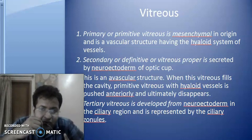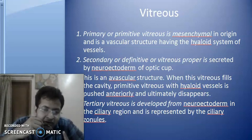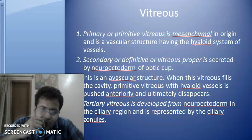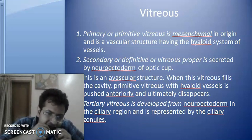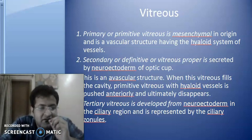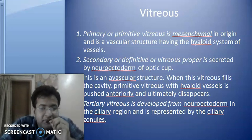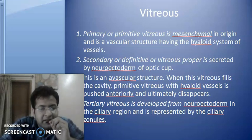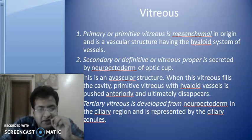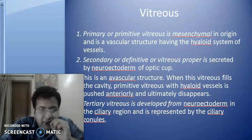The Primitive Vitreous is mesenchymal in origin, while the Secondary or Definitive Vitreous and the Tertiary Vitreous are from the neuroectoderm. The Secondary Vitreous is from the neuroectoderm of the optic cup and the Tertiary Vitreous is from the neuroectoderm in the ciliary region. The Tertiary Vitreous differentiates into the ciliary zonules, the Secondary into the vitreous proper, and the Primitive Vitreous contains the hyaloid system of vessels which disappear by birth.